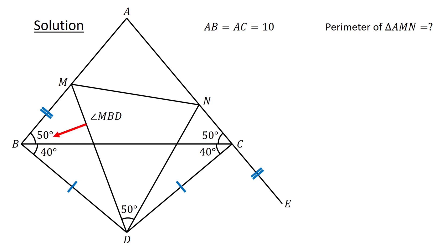Next, consider angle MBD which equals 50 degrees plus 40 degrees and thus is a right angle. Similarly, angle DCN equals 90 degrees. Therefore, the adjusted angle DCE is also a right angle.